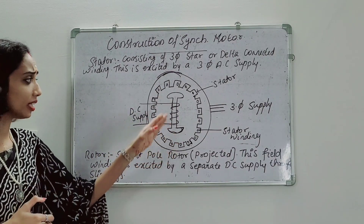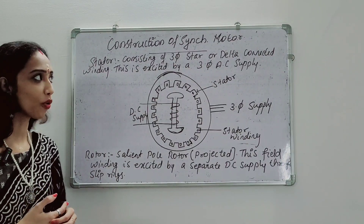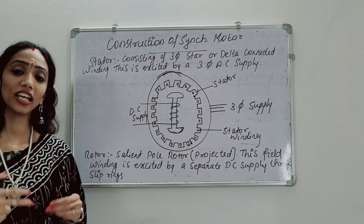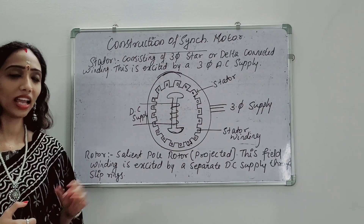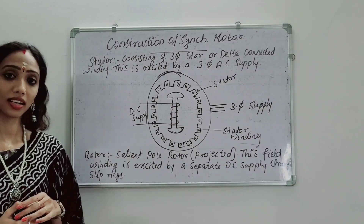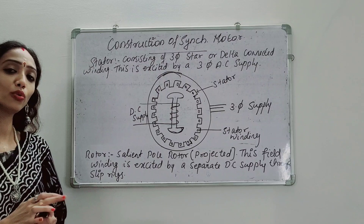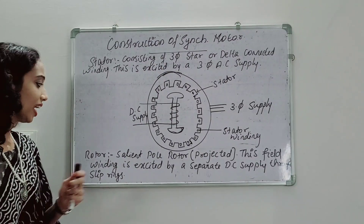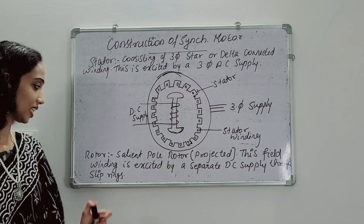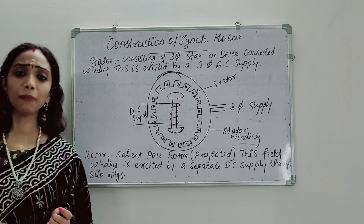Now, we rotate this rotor with excitation provided. In summary, the construction of a Synchronous Motor: these machines are similar to the Alternator. It consists of two main parts — the Stator and the Rotor. The Stator has a 3-phase star-connected or delta-connected winding with 3-phase excitation. The Rotor is a Salient Pole type, and this field winding is excited by a separate DC supply through the slip ring.